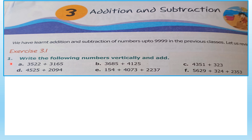Let's start the first one: write the following numbers vertically. The numbers are written horizontally, but vertically means one below the other and then we add. Let's start with question A. To write it vertically, remember these are 4-digit numbers. So let's write the places: ones, tens, hundreds, and thousands.